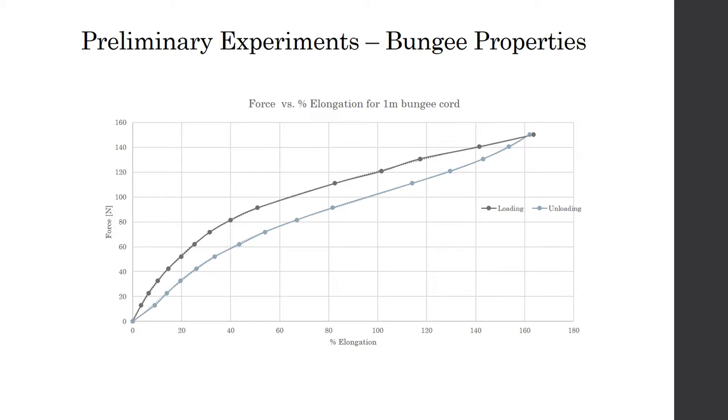This behavior suggests that the force in the bungees decreases over time at a given elongation. It is also clear from the data that the force in the bungees is highly nonlinear and Hooke's law cannot be used to describe the behavior. A curve fit was then used to obtain an equation to obtain the force at a percentage elongation.